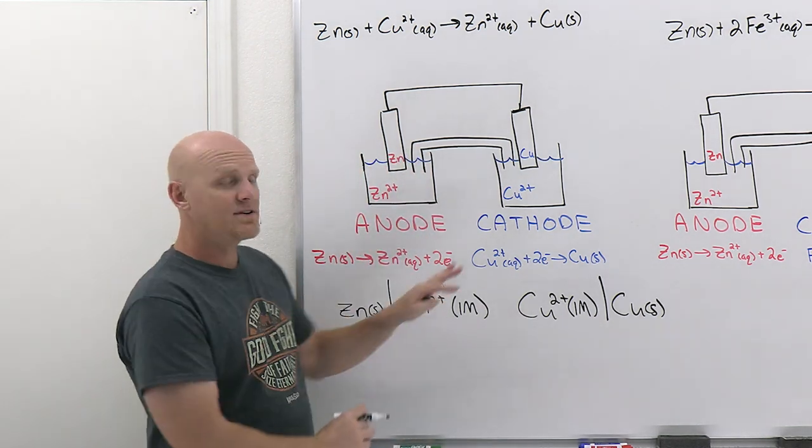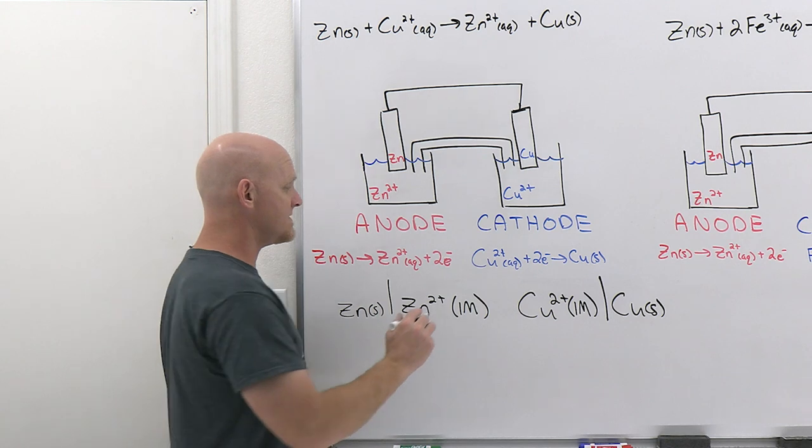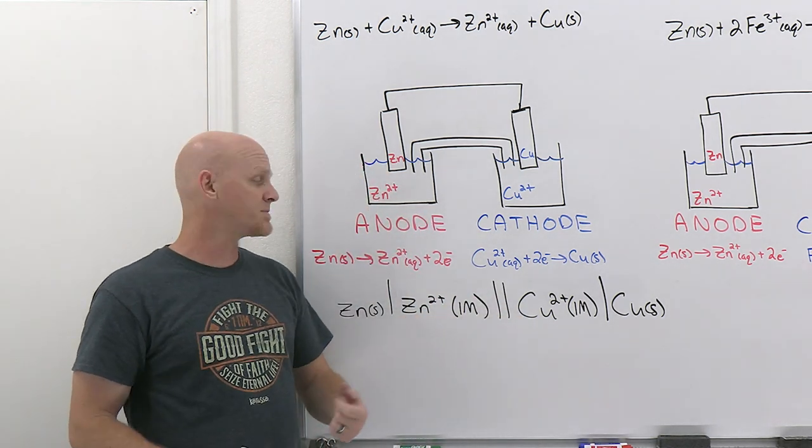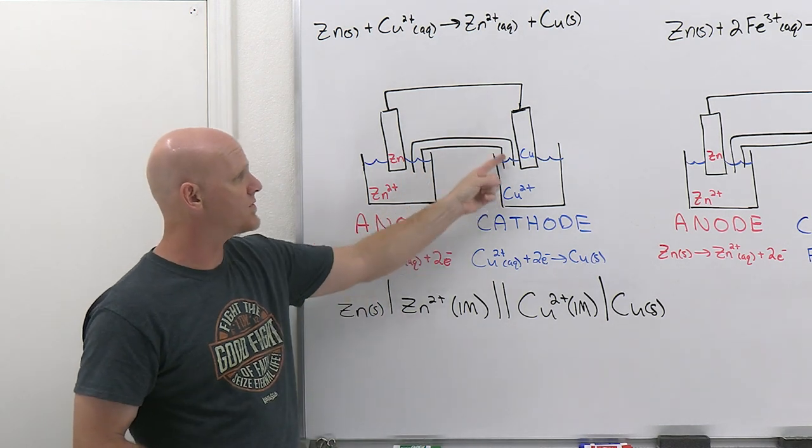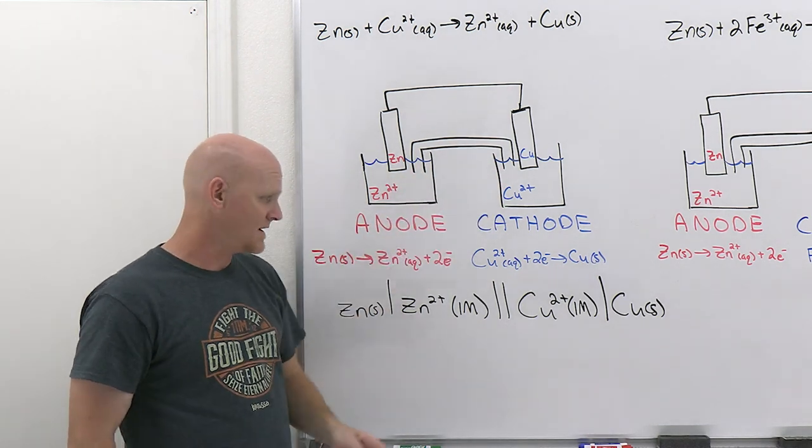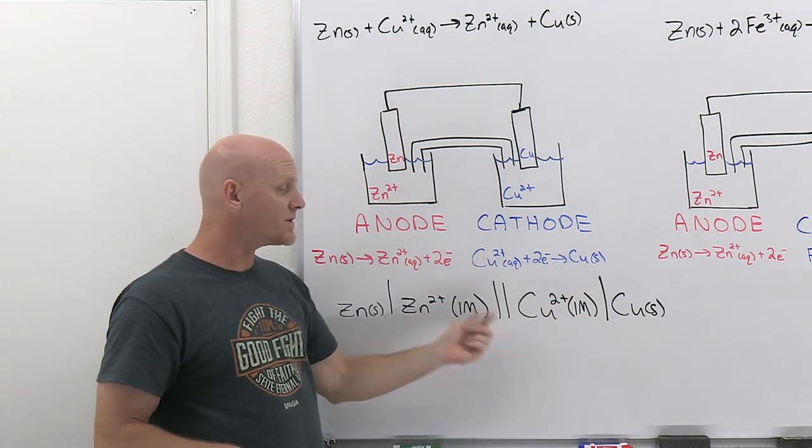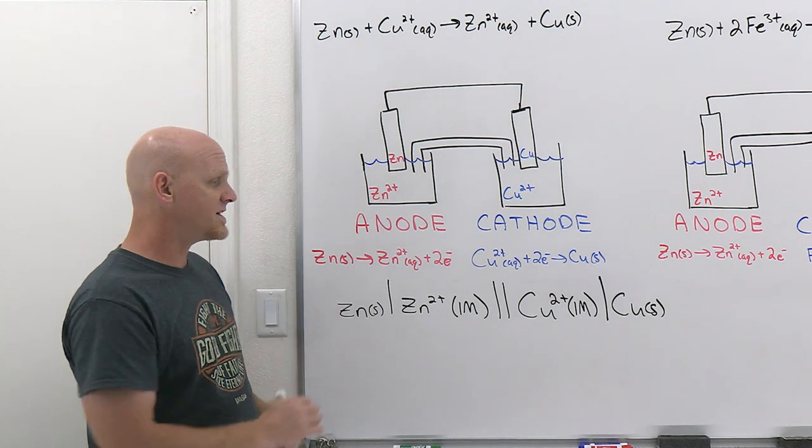So we've got anode on the left, cathode on the right, and in between them, you're typically going to have a double slash, and what that double slash is actually representing is the salt bridge between the two half cells. With the anode on the left, the cathode on the right, you're almost always going to have that salt bridge right in the middle, and that's your cell notation.